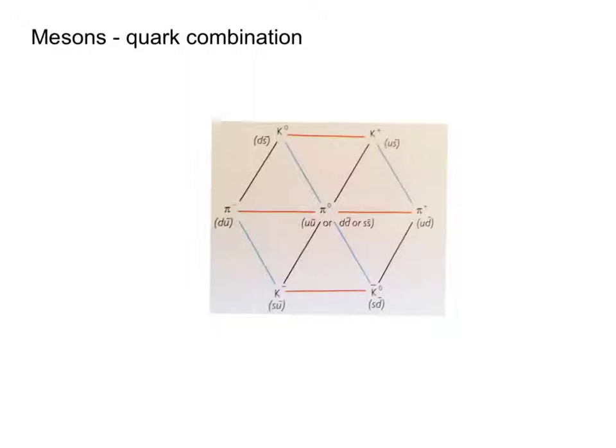So quark combinations, well mesons are made out of two quarks, a quark and an anti-quark. The pi-zero meson can be up-anti-up, down-anti-down or strange-anti-strange.